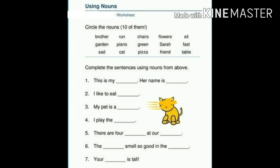Next page — aap logo ko ye kaam karna hai. It's your assignment. Niche jo fill in the blanks dhi gai hai, usko upar jo naam uski half se fill karna hai. Fill in the blanks: First — 'This is my dash hand.' Second — 'Name is dash.' Third — 'I like to eat dash.' Fourth — 'My pet is dash.' Fifth — 'I play the dash.' Sixth — 'There are four dash.' Seventh — 'The smell so good in the dash.' Eighth — 'Your dash is stall.'